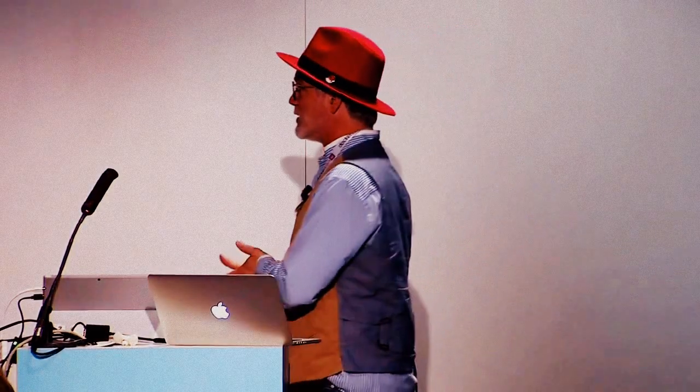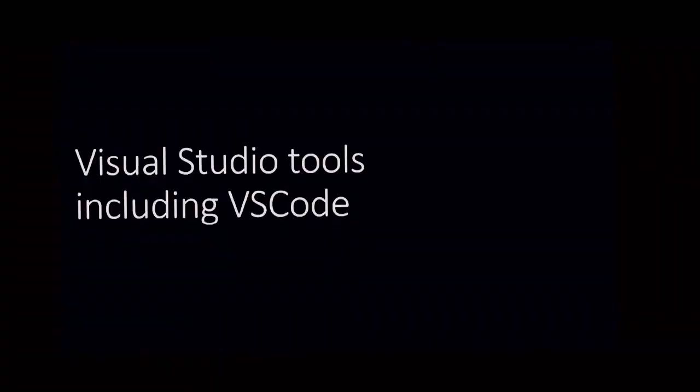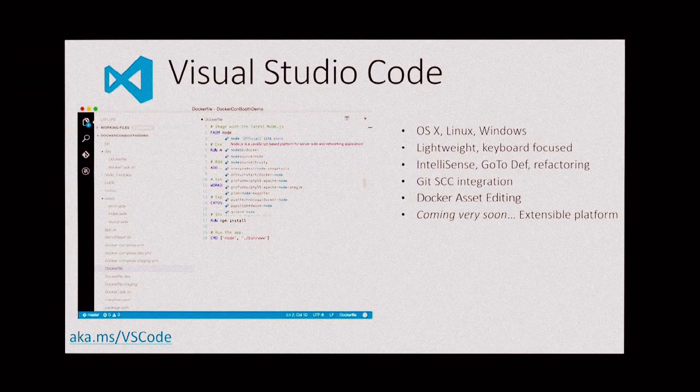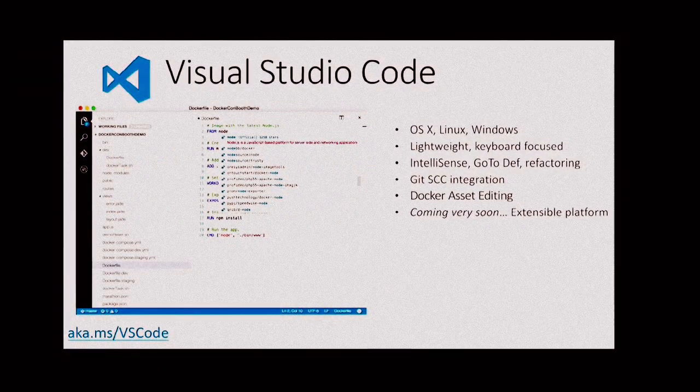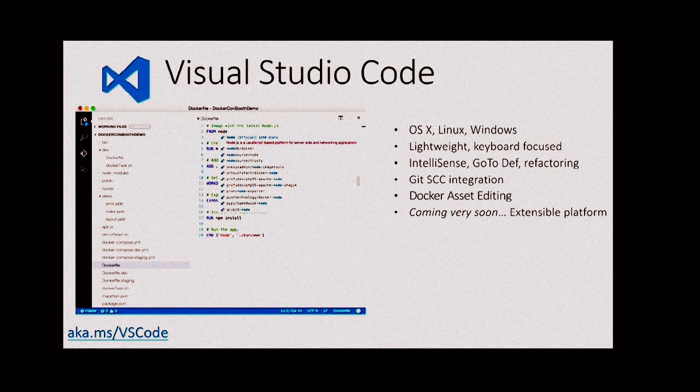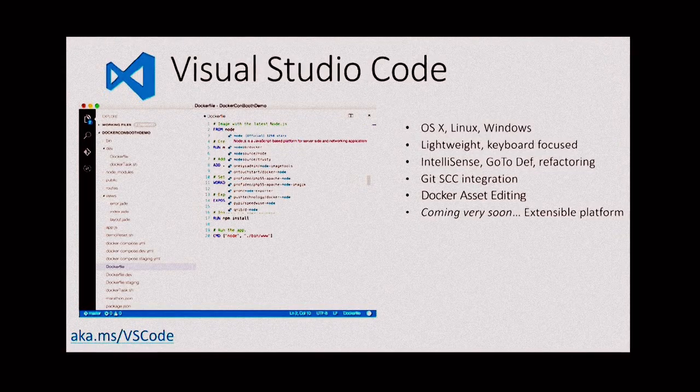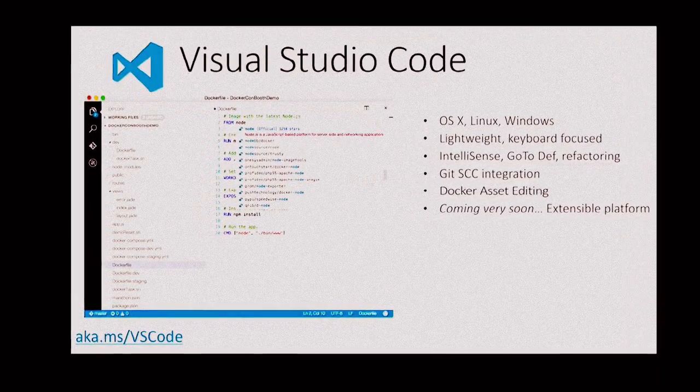We'll start with the Visual Studio tools, including VS Code. You'll notice that we're running on a Mac here. Visual Studio Code is a lightweight IDE for developers. It keeps you on the keyboard. It's fast. It's implemented in TypeScript and compiles out to JavaScript. You have IntelliSense, Git integration, and Docker asset editing with IntelliSense. We'll show how it works.